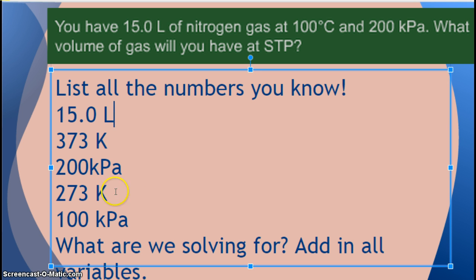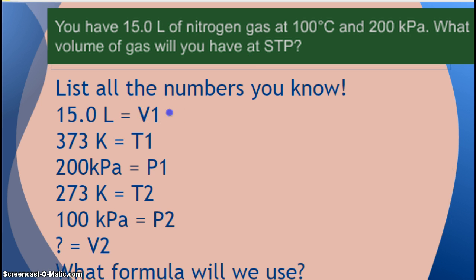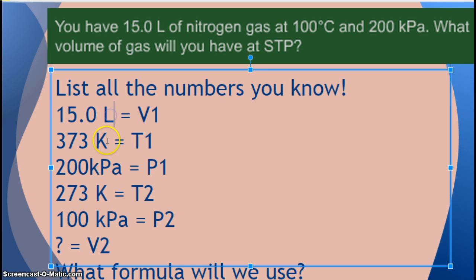All right, so hit pause, and tell me for each of these, are they V1, V2, P1, P2, T1, T2? The answers are, this is your starting volume, because it's liters. Kelvin is temperature, kilopascals is pressure, and they said that we're going to STP, so these would be our second temperatures and pressures, and we're solving for our final volume.